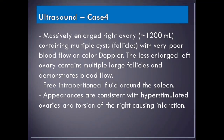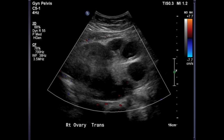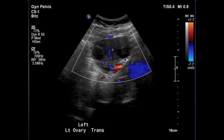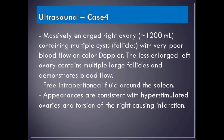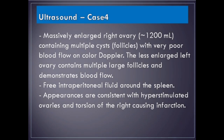Case 4: A 30-year-old female presented with severe right abdominal pain following ovarian stimulation for infertility. Ultrasound imaging findings show a massively enlarged right ovary totaling 1,200 milliliters, containing multiple cysts and follicles with very poor blood flow on color Doppler. The less enlarged left ovary contains multiple large follicles and demonstrates blood flow. Free intraperitoneal fluid is seen around the spleen. Appearances are consistent with hyperstimulated ovaries and torsion of the right ovary causing infarction.